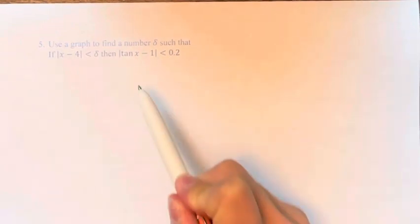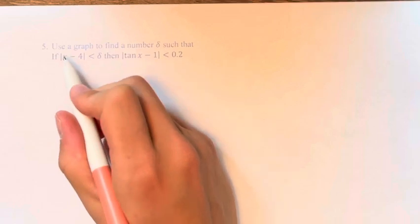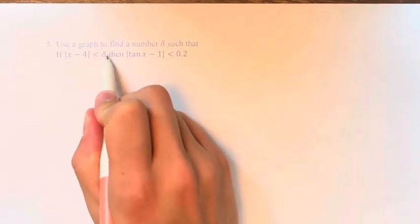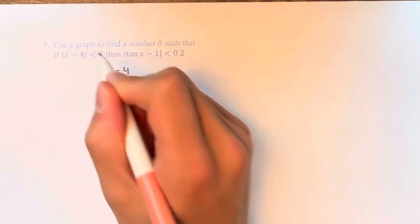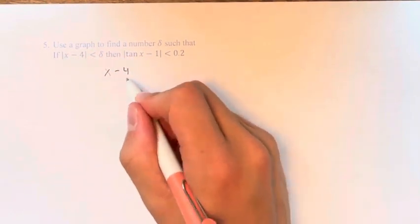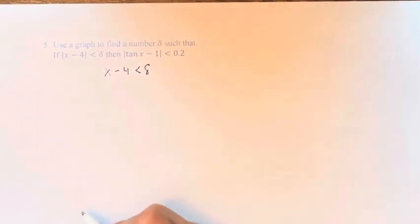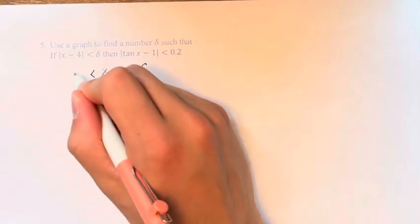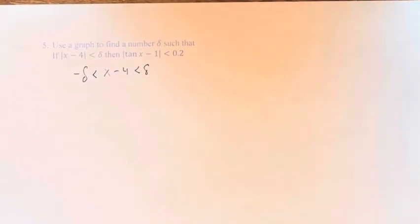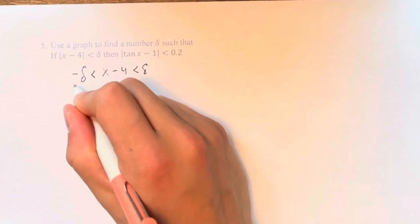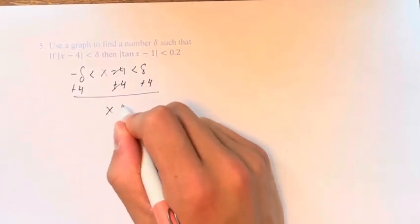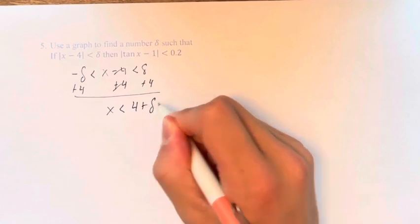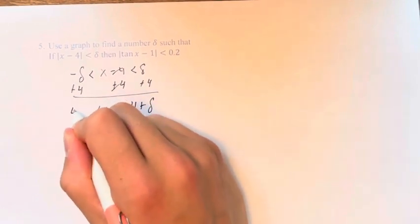So to understand what this means, we're going to dissect these inequalities. If the absolute value of x minus 4 is less than delta, then the magnitude of this is less than delta, which means either x minus 4 is less than delta and it's greater than negative delta. And if we add 4 to this inequality, we get that x is less than 4 plus delta and it's greater than 4 minus delta.